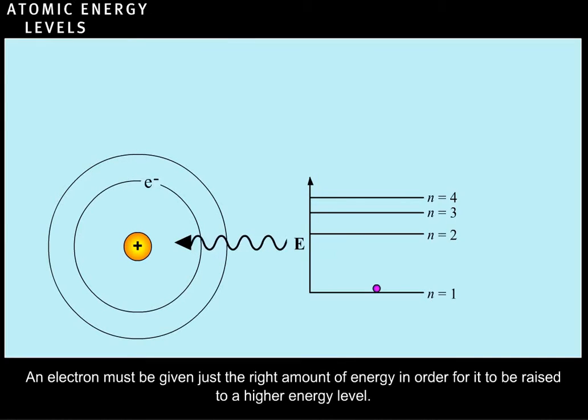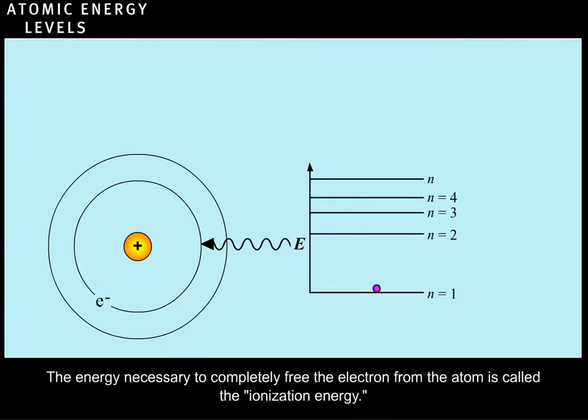An electron must be given just the right amount of energy in order for it to be raised to a higher energy level. The energy necessary to completely free the electron from the atom is called the ionization energy.